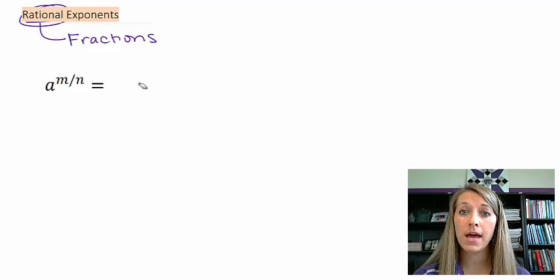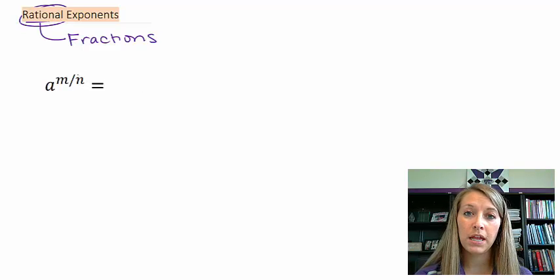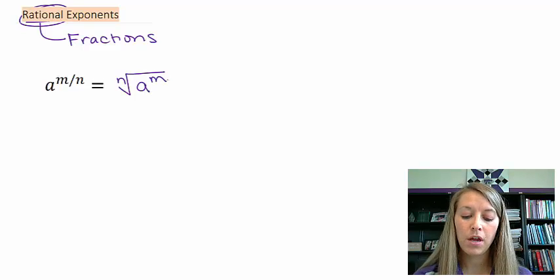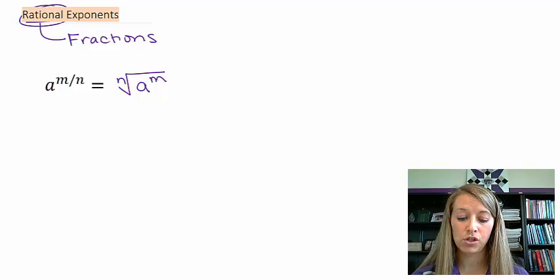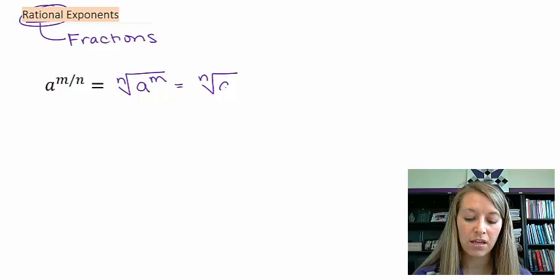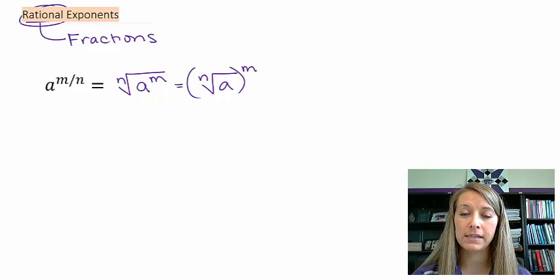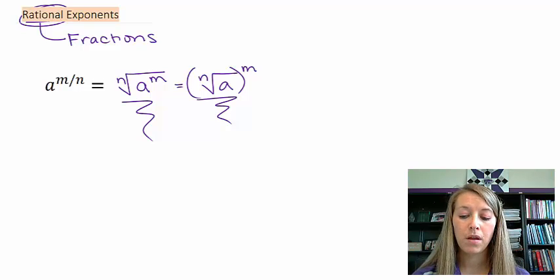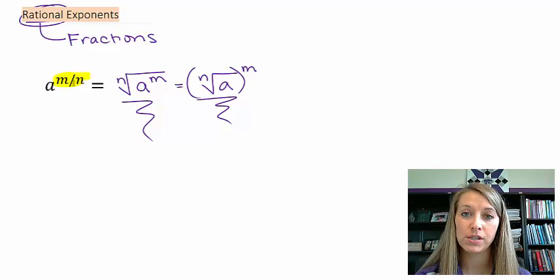The denominator of your exponent, in this case n, becomes the root. So an nth root. The numerator of your exponent stays as the power, giving the nth root of a to the mth power. It doesn't matter whether you do the nth root first or the nth power first — both are perfectly acceptable. Most examples in this video will be converting back and forth between rational exponents, where we have fractions in the exponents, and roots or radical notation.